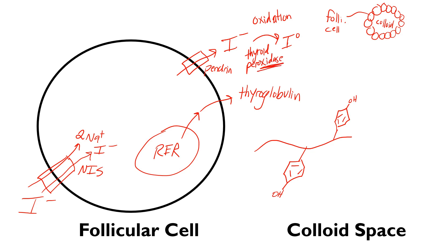Thyroid peroxidase even has 'oxidase' in the name. When this iodine is oxidized down to the atomic iodide state, it will come over to these tyrosine segments and bind — either once, forming something called MIT (monoiodotyrosine, mono meaning one iodine on the tyrosine), or it could bind twice, forming DIT (diiodotyrosine, di for two iodines on the tyrosine). This process of atomic iodine binding to form MIT or DIT is called organification.